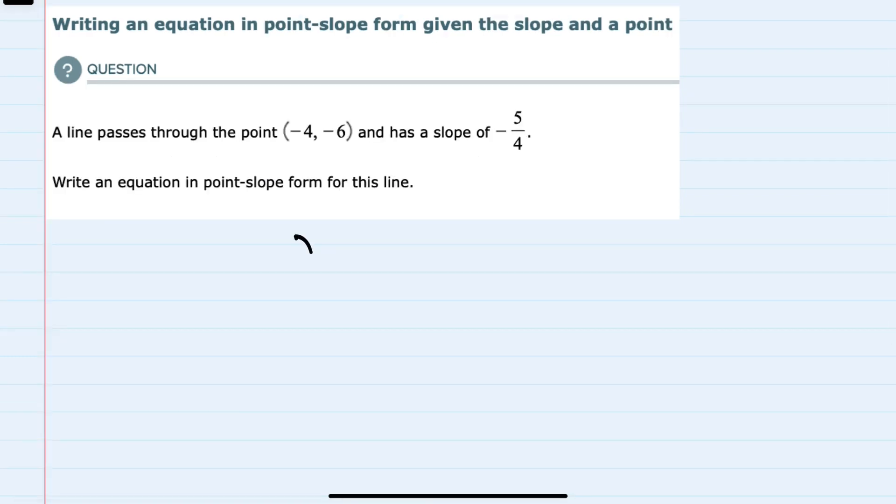So we recall that the point-slope form is y minus y sub 1 equals m times x minus x sub 1, where m is the slope, x1 is the x value of the point, and y1 is the y value of the point. So doing that substitution,